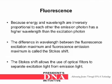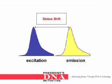Because energy and wavelength are inversely proportional to each other, the emission photon has a higher wavelength than the excitation photon. The difference in wavelength between the fluorescence excitation maximum and the fluorescence emission maximum is called the Stokes shift. The Stokes shift allows the use of optical filters to separate excitation light from emission light.